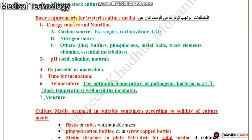Now, what are the basic requirements for bacteria which are present in culture media? To isolate bacteria in our laboratory, we must provide the same conditions in which they live. Number one: energy sources and nutrition. Bacteria need an energy source and nutrition for growth and multiplication — for example, carbon source, nitrogen source, sulfur, phosphorus, metal salts, and trace elements.